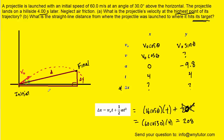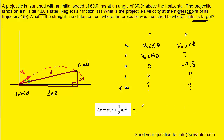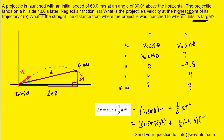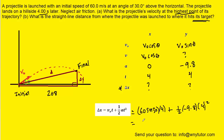Now we find Δy using the same equation but with y-direction values. Δy = v₀sinθ · t + ½at². Plugging in: 60 × sin(30°) × 4 + ½ × (−9.8) × 4². Working that out on our calculators gives exactly 41.6 meters. That's the displacement in the y direction, and we fill it into our diagram.